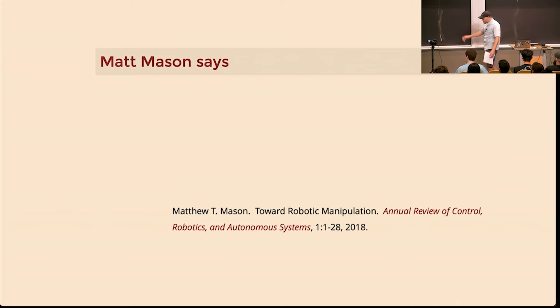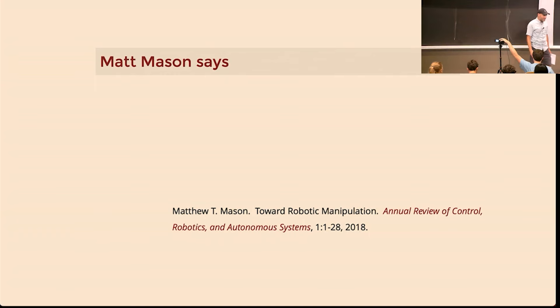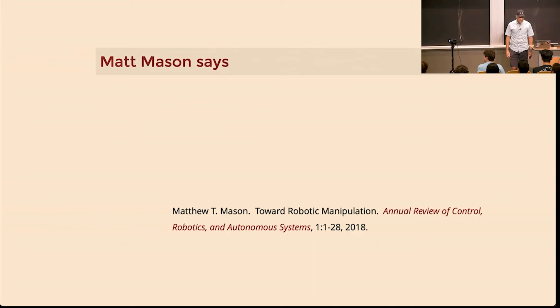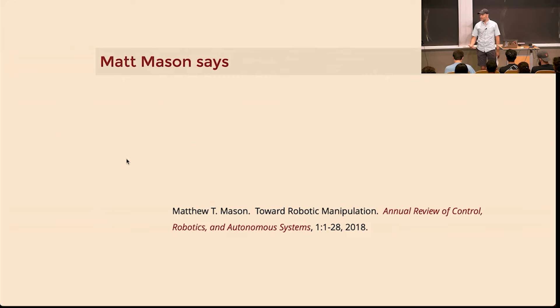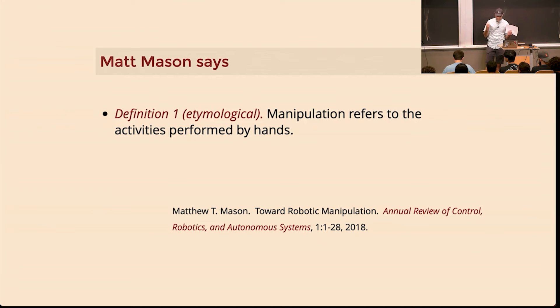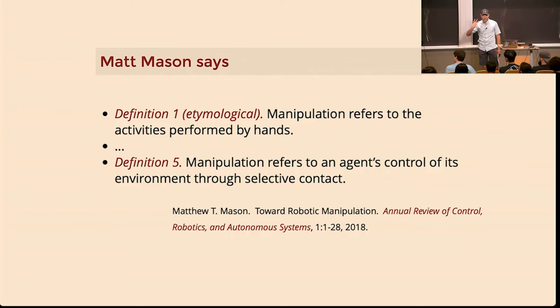What is manipulation? One important figure in manipulation research is Matt Mason from Carnegie Mellon. He has a beautiful review of robotic manipulation and was very thoughtful about all the different ways you might define it. His first definition was that manipulation means activities performed by the hands - tool use, picking up objects. He goes through several possible definitions, but maybe the most operative one for this class is definition five: manipulation refers to the agent's control of the environment through selective contact. My goal is to affect a change in the environment - I've got people, objects, whatever in the world - and I want to apply forces to affect change. That task is manipulation.